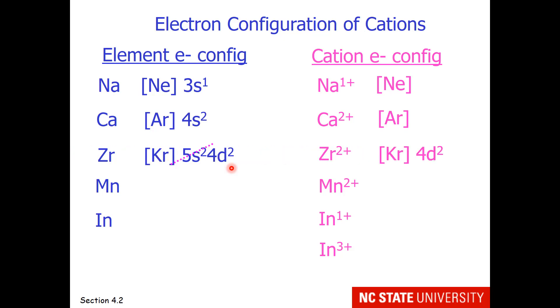I hope you say the 5s. So the electron configuration of zirconium 2 plus is krypton, 4d2.